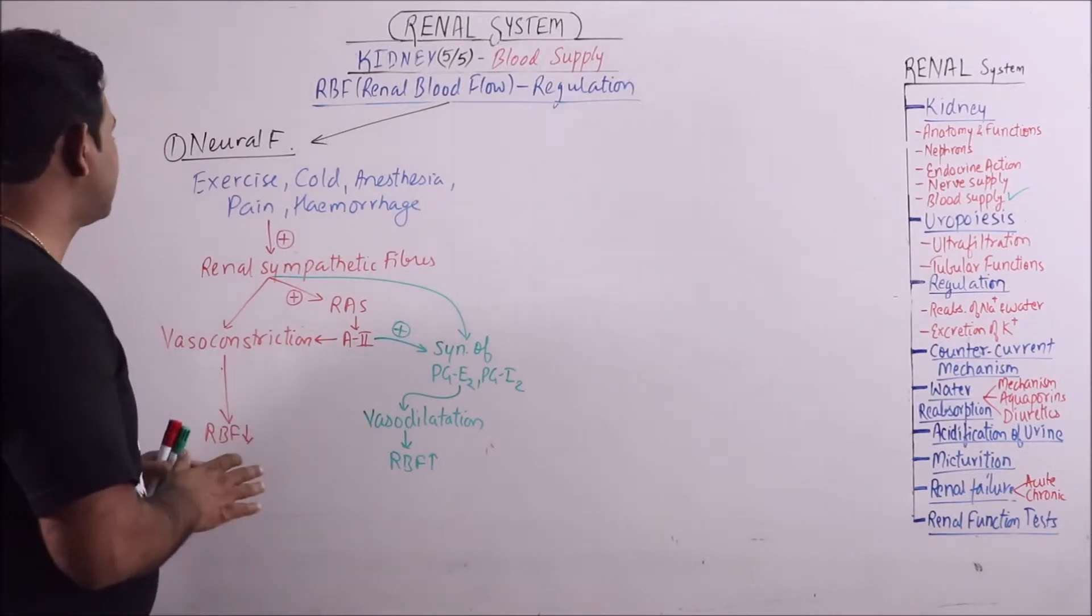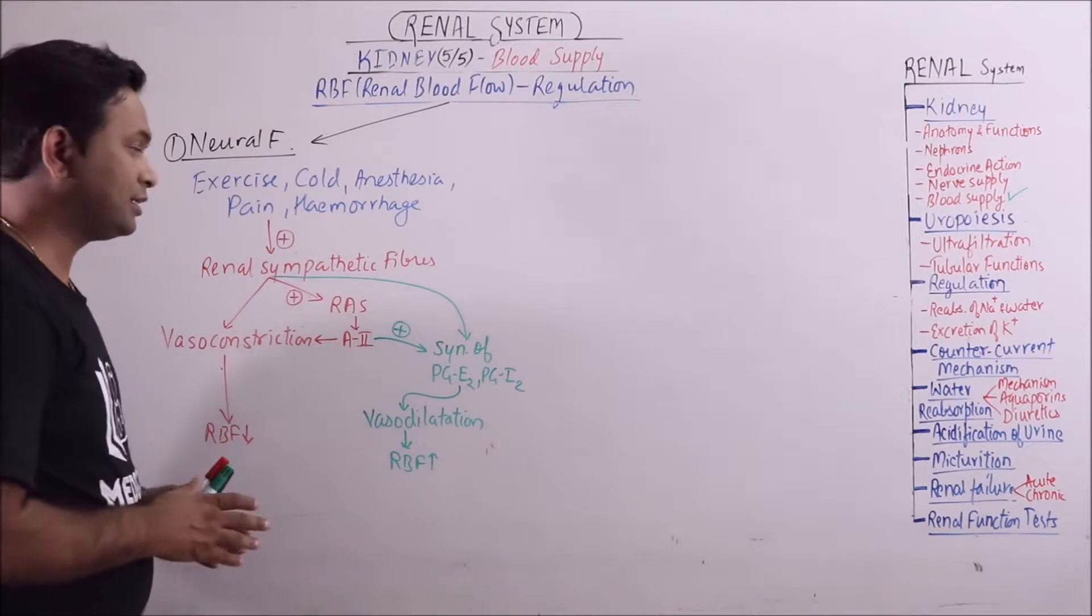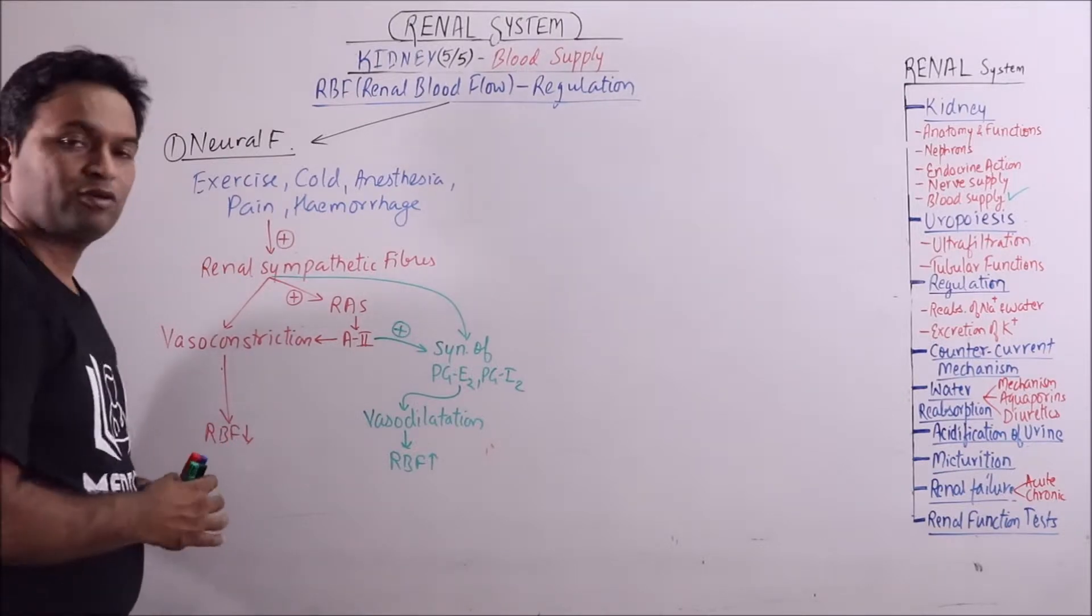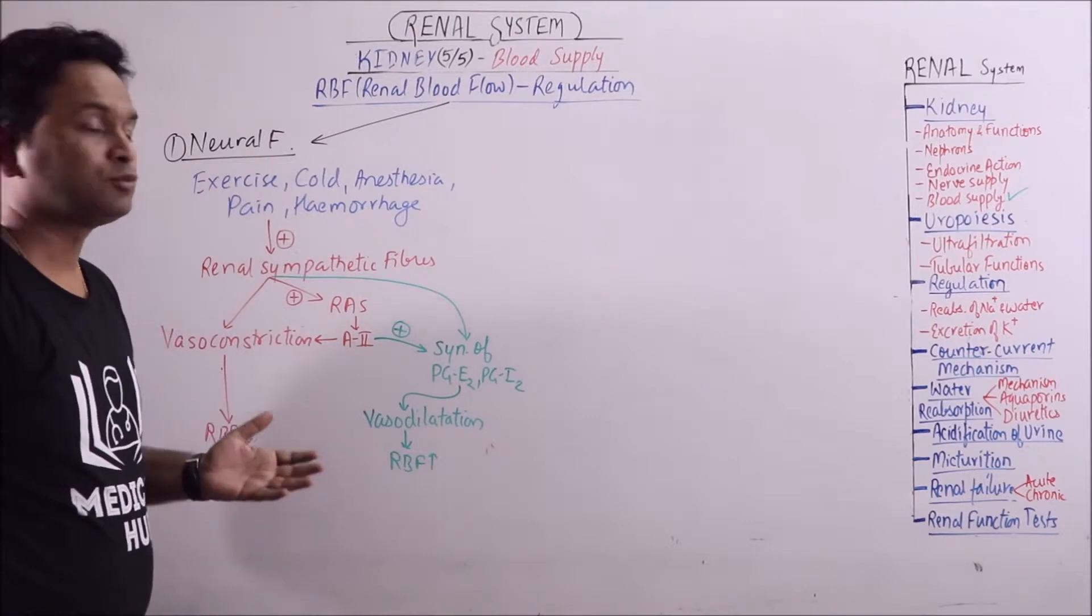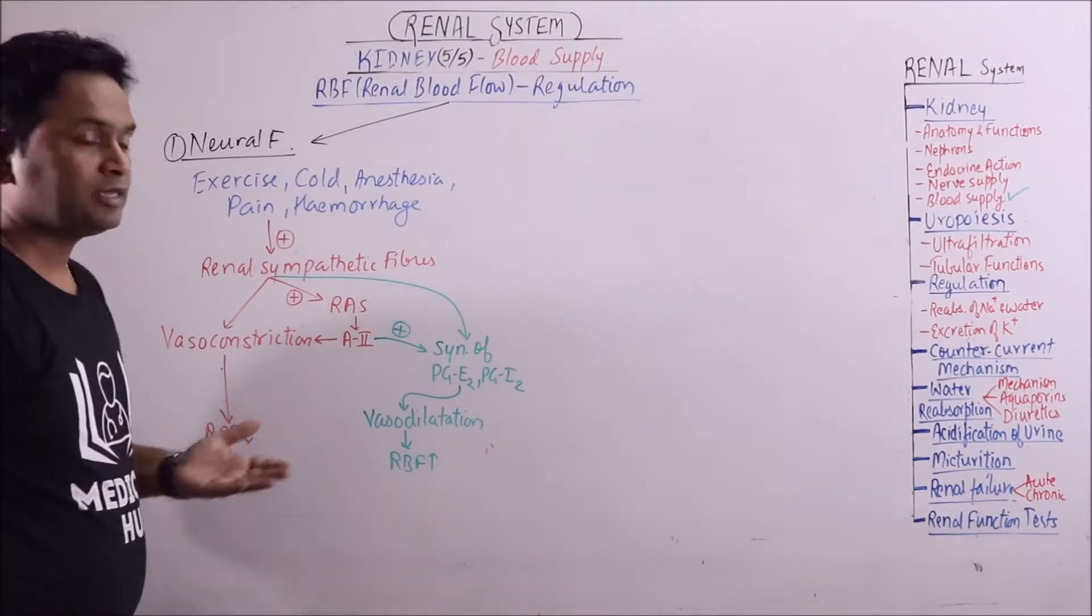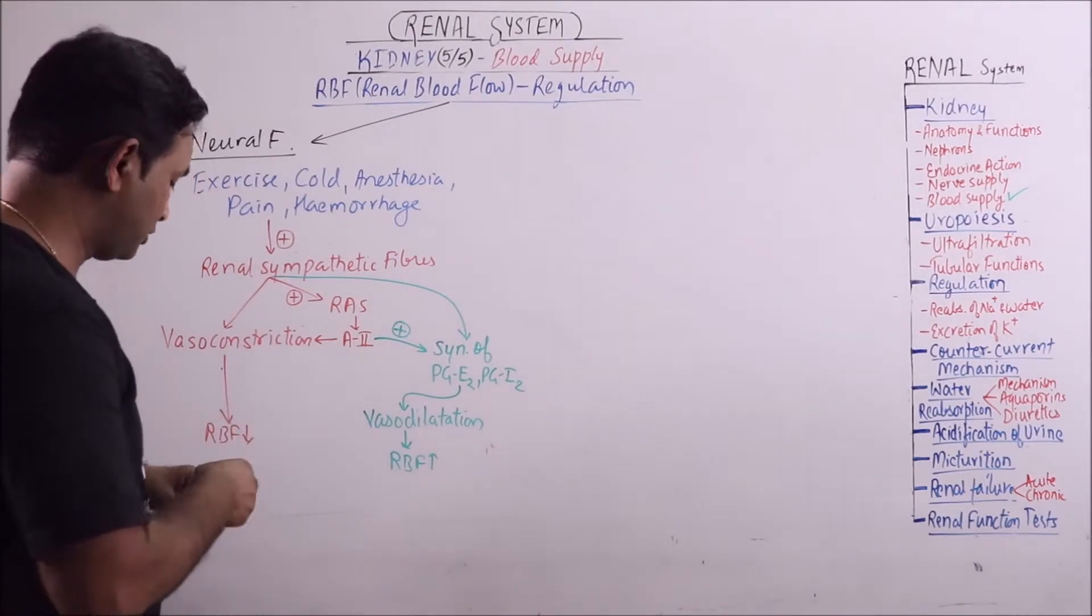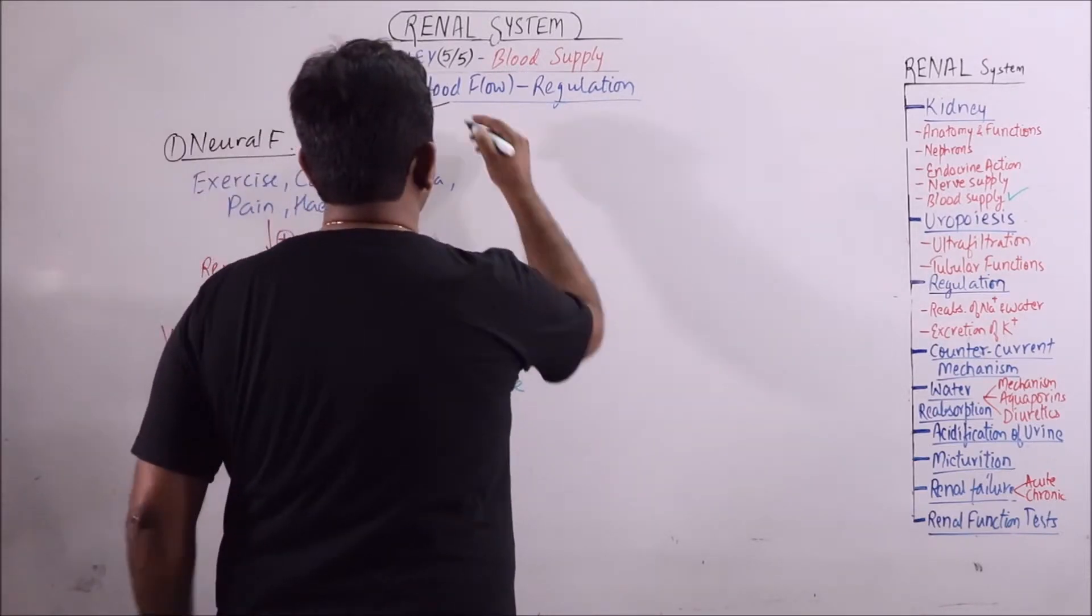So until and unless the sympathetic stimulation is prolonged and very intense, there is no significant effect on RBF, and if such stimulation continues for a long time or it is prolonged, then renal shutdown may also occur. So this is the effect of neural factors.